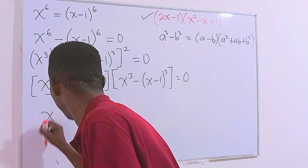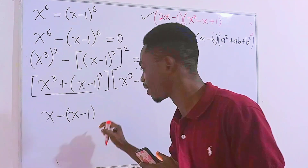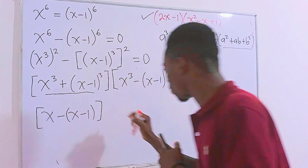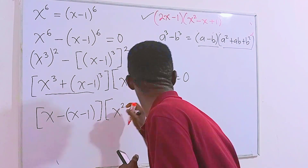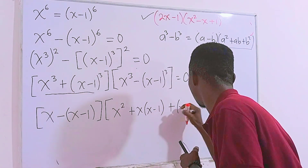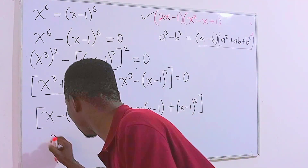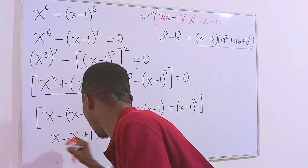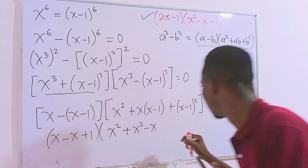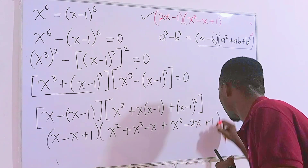For the second factor, using the difference of cubes identity, we have x minus (x minus 1) in brackets, then times x squared plus x(x minus 1), then plus (x minus 1) squared. Simplifying: x minus (x minus 1) gives 1. For the second factor: x squared, plus x squared minus x, then expanding (x minus 1)² gives x squared minus 2x plus 1.